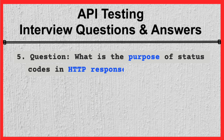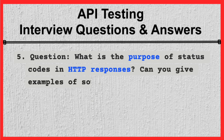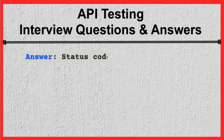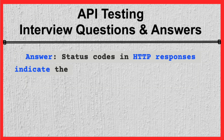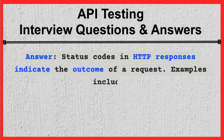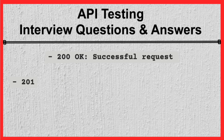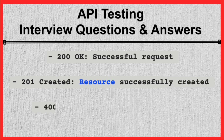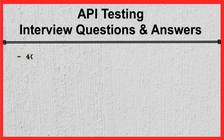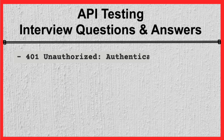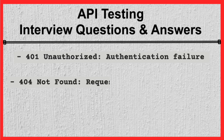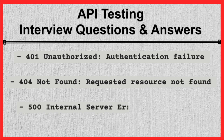Question 5. What is the purpose of status codes in HTTP responses? Can you give examples of some common status codes? Answer. Status codes in HTTP responses indicate the outcome of a request. Examples include: 200 OK — successful request; 201 Created — resource successfully created; 400 Bad Request — invalid request; 401 Unauthorized — authentication failure; 404 Not Found — requested resource not found; 500 Internal Server Error — server error.